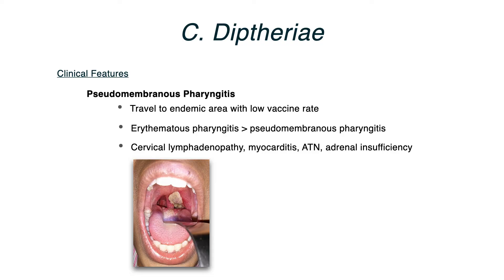The reason for these systemic symptoms is that once the beta-prophage exotoxin enters the blood and lymphatics and disseminates throughout the body, it can affect the heart causing myocarditis, the kidney causing acute tubular necrosis, and the adrenal glands causing adrenal insufficiency. Pseudomembranous pharyngitis remains the main highest-yield clinical feature for your exam.